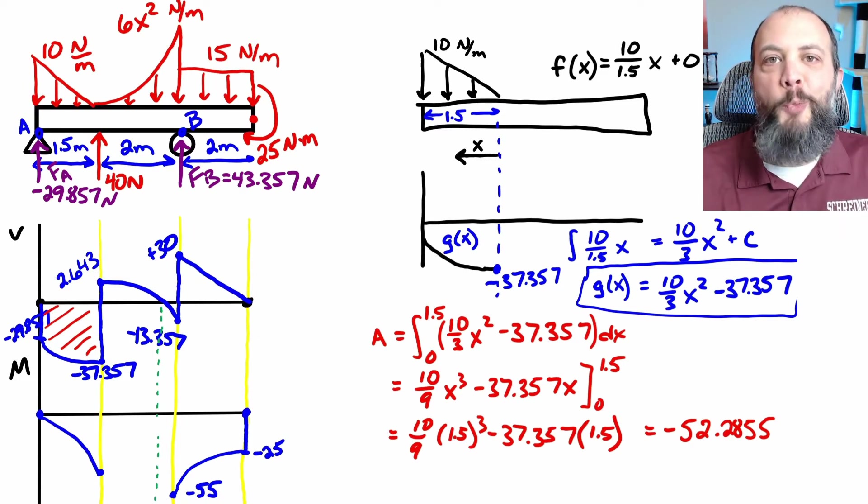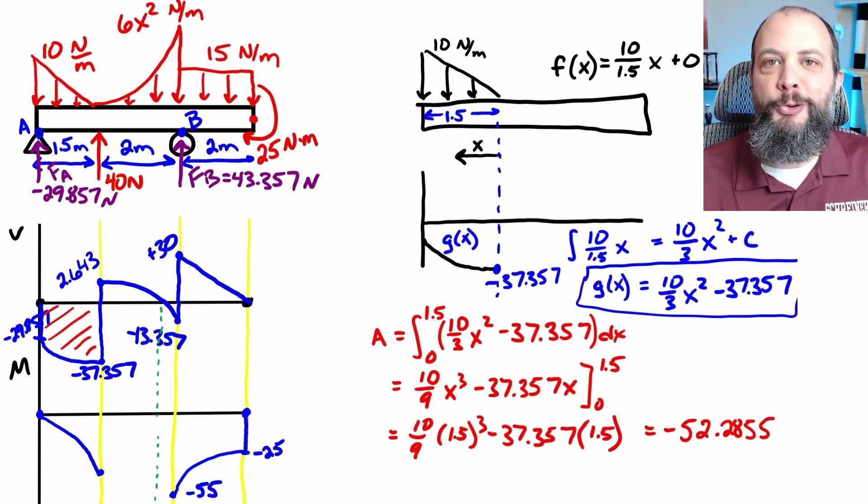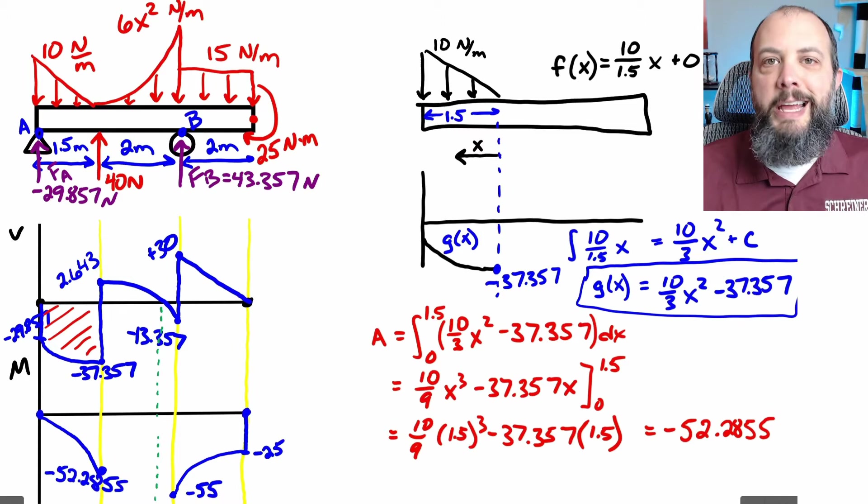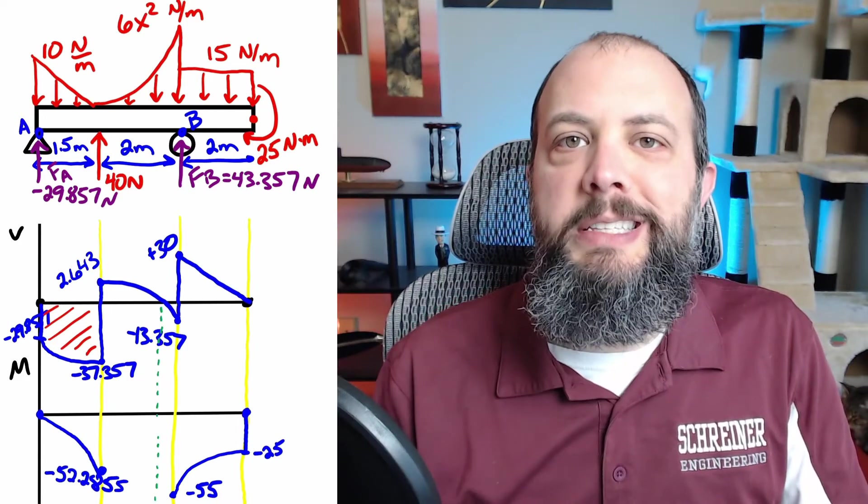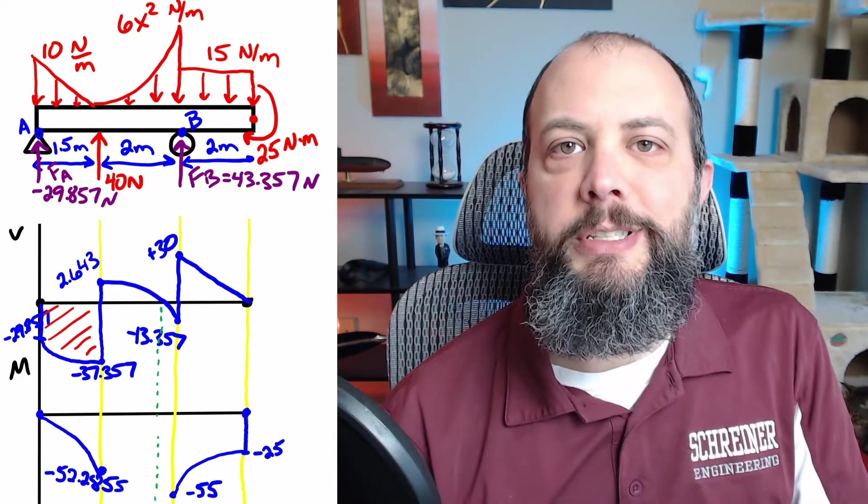So then integrating this one more time, but doing a definite integral will actually give the area of that shape. And this value, negative 52, is negative because it's underneath the x-axis. And this negative 52 value is then the value to actually label on your moment diagram.